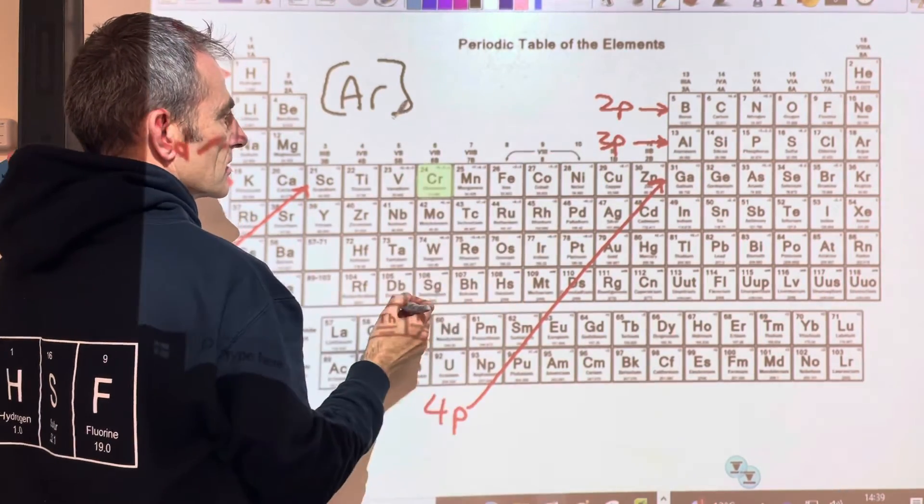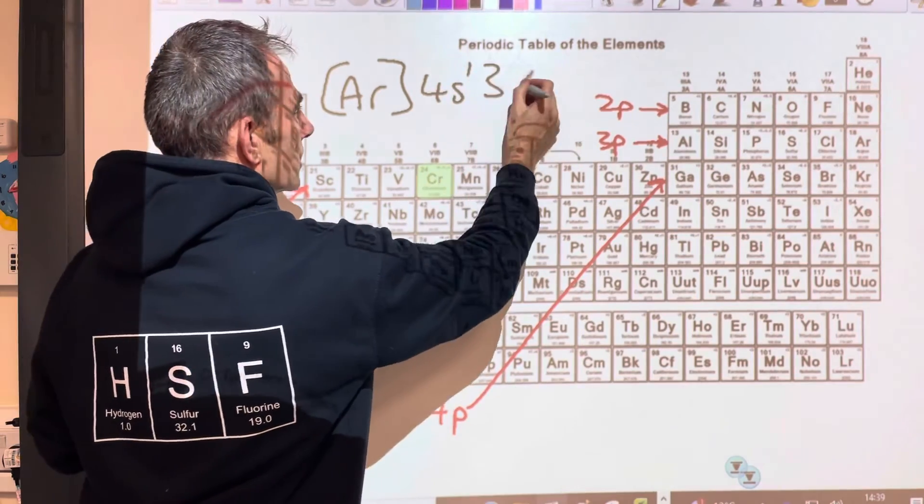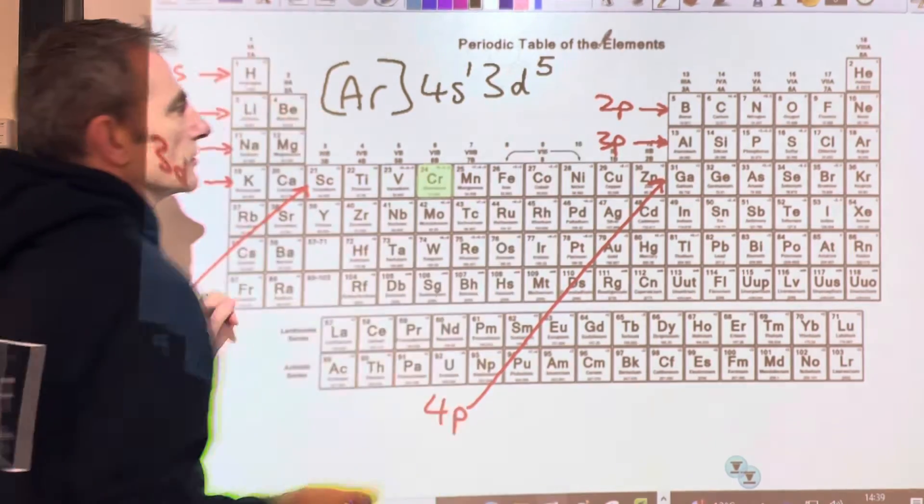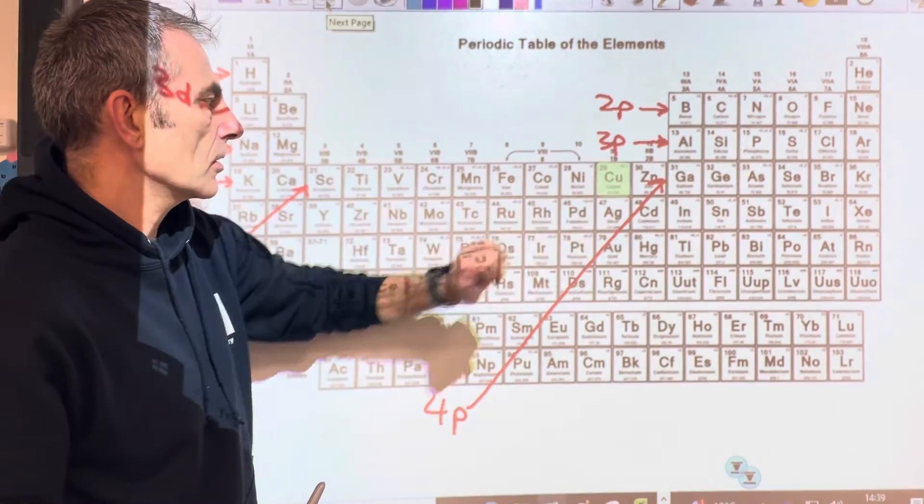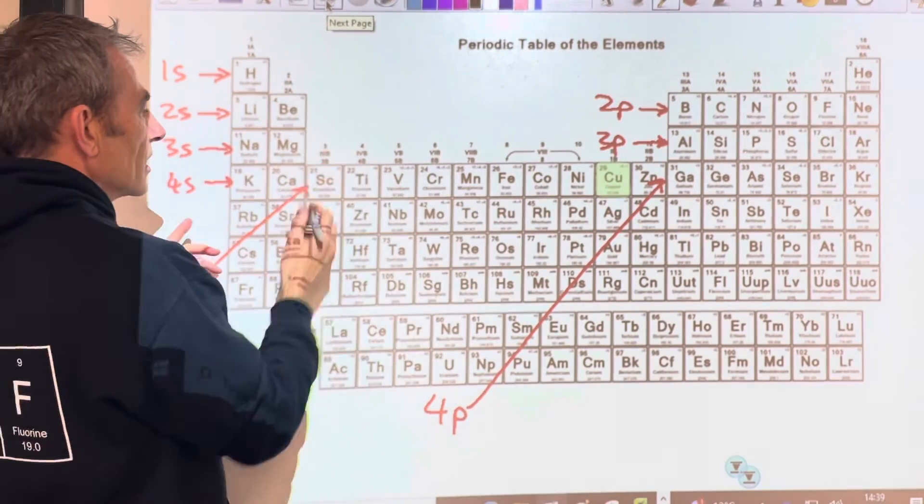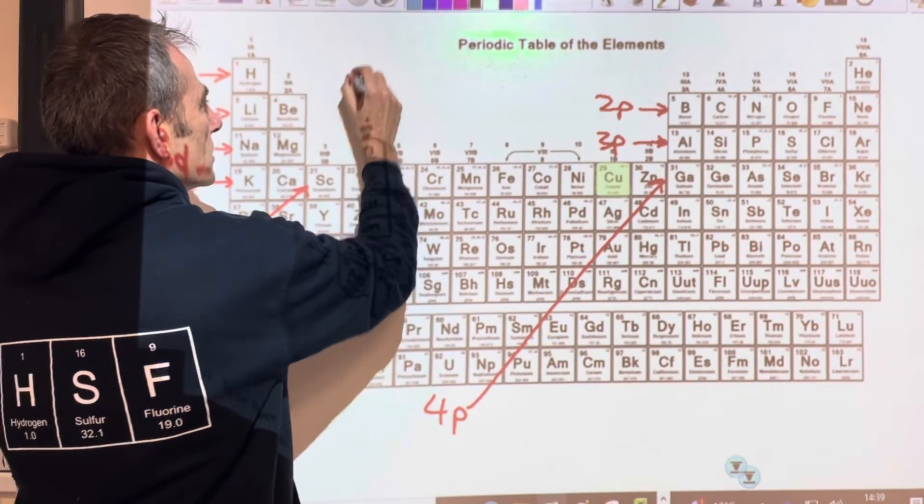And then the last one - copper. So that's the other rogue one. So you'd expect it to be argon 4s² 3d⁹, but it's not. It's argon 4s¹ 3d¹⁰. And that's it.